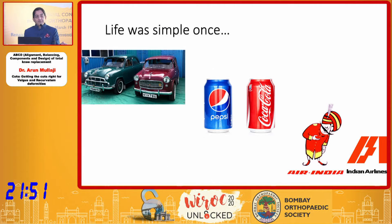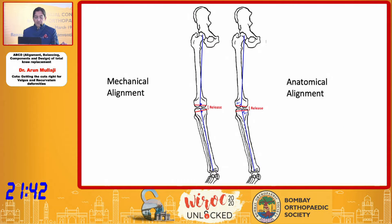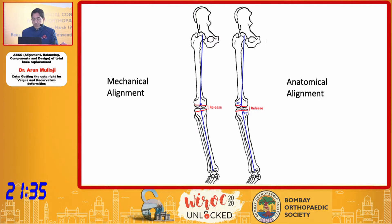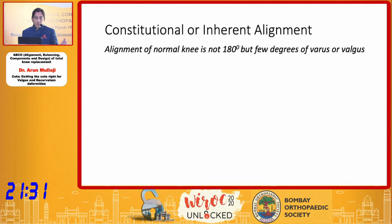Once life was very simple — you had an Ambassador and a Fiat, you had Pepsi and Coke, and you had Air India and Indian Airlines. Now of course you have lots of choices. In knee replacement, we had mechanical alignment, which most people followed, and then a few tried anatomical alignment. You've heard all this before, so fortunately we can go through this quickly.